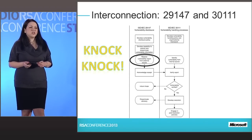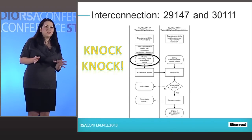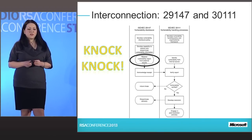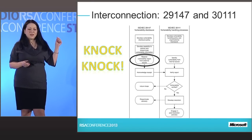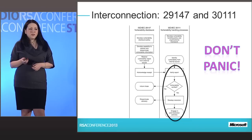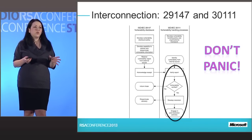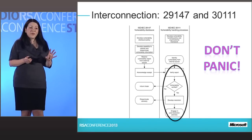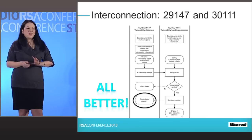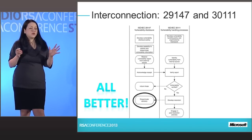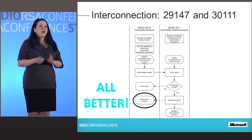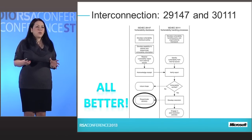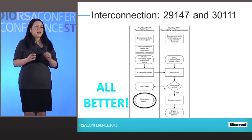This diagram shows the interconnectedness between these two standards and appears in both of them. The point at which the hacker comes knocking is in 29147. At that point, you go into the internal process for resolving the vulnerability in 30111. We're going to walk through each of the phases for doing this investigation. At the end, you'll release an update, an advisory, or a bulletin that lets your users know how to tell if they're vulnerable, what to do about it, and what the severity is.